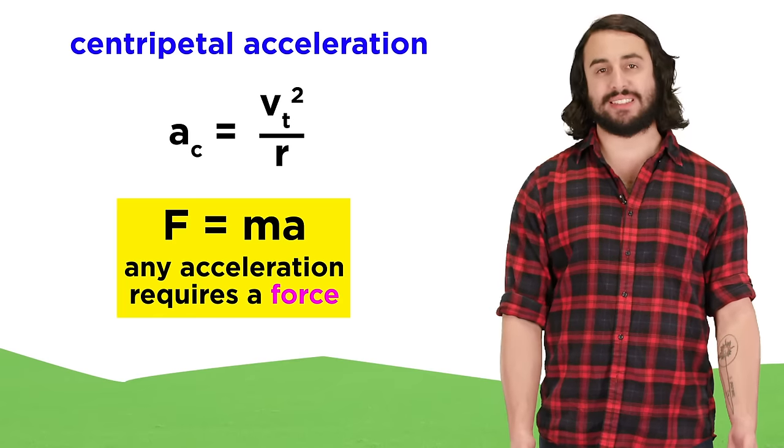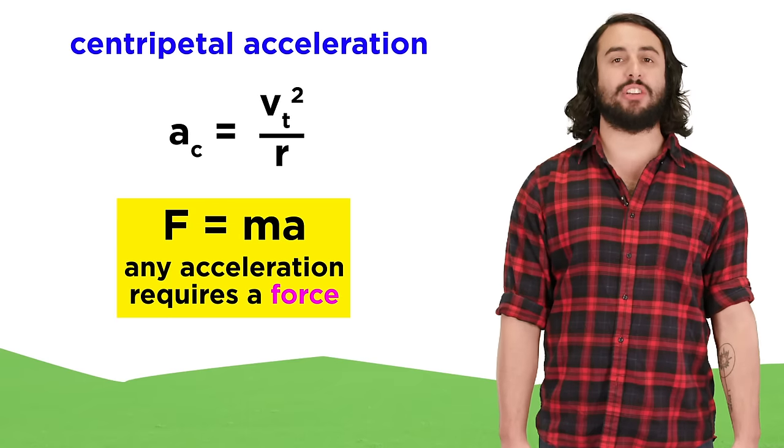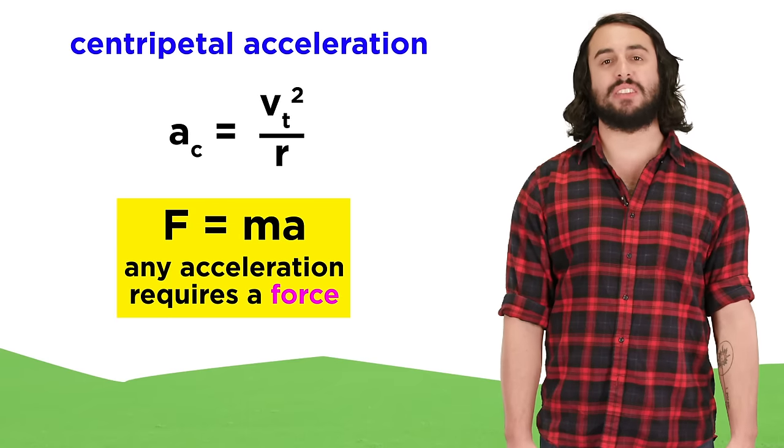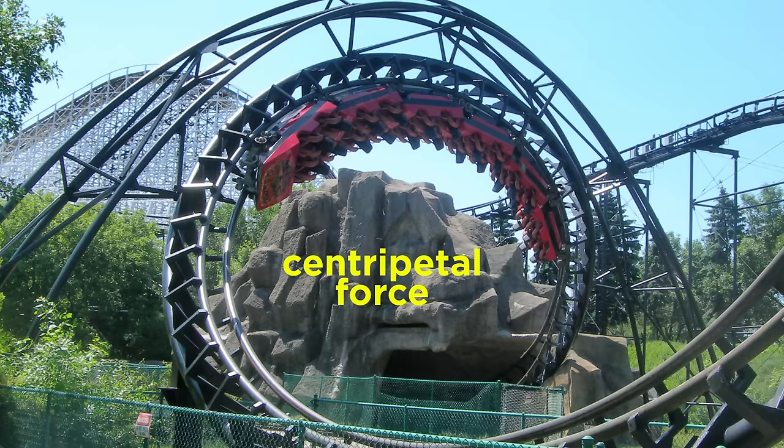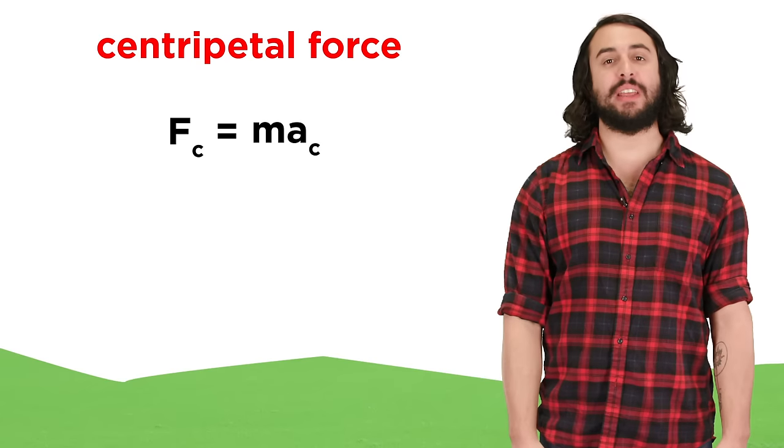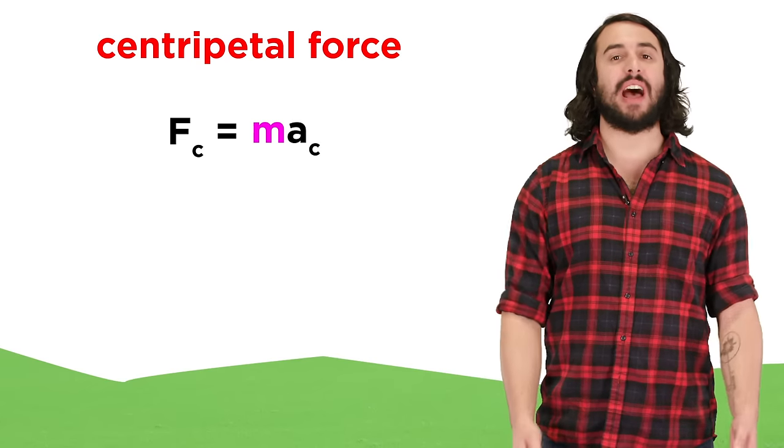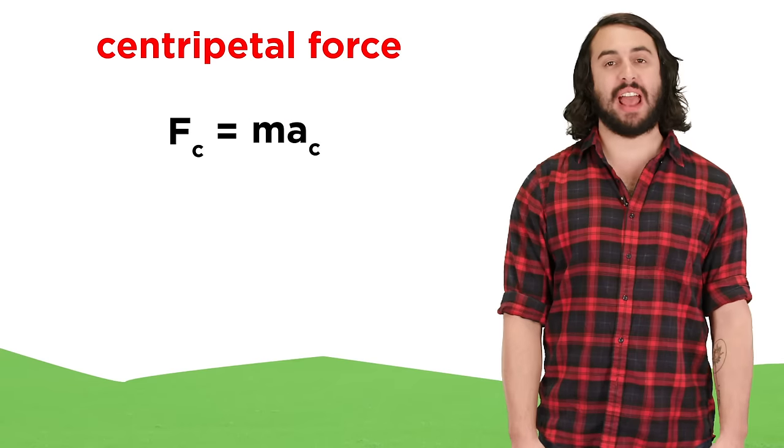We know from Newton's second law that if an acceleration occurs, there must be some force present to produce it, and centripetal acceleration is generated by the centripetal force. Centripetal force is simply centripetal acceleration times the mass of the object, since F equals MA.